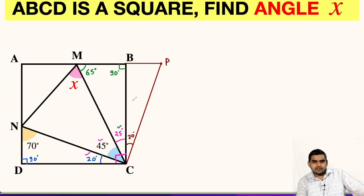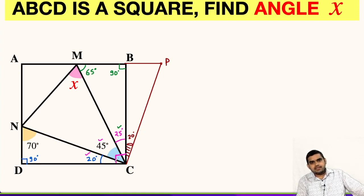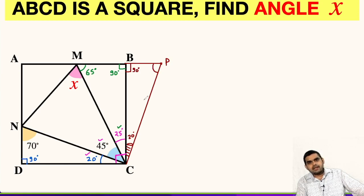In triangle BCP, by construction we have taken this angle as 20 degrees, and angle B will be 90 degrees. So the third angle will be 180 minus 90 minus 20, that is 70 degrees.